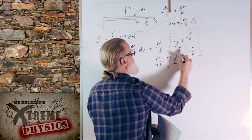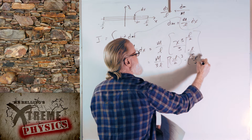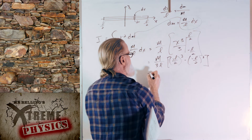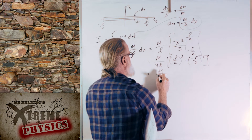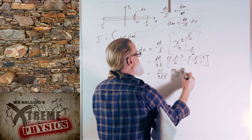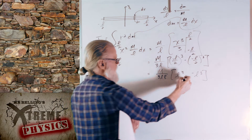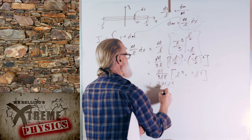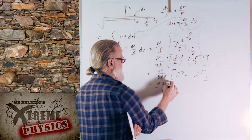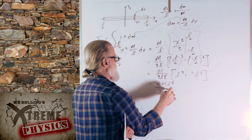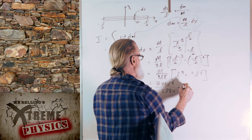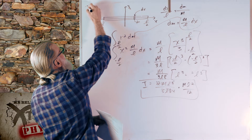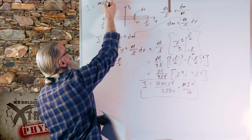We have L over 2 cubed minus negative L over 2 cubed. Cubing the 2's: 2 times 2 is 4, times 2 is 8, so we factor out one-eighth. That gives M over 3L times 8, times L cubed minus negative L cubed — which becomes 2L cubed. So we have 2ML cubed over 3L times 8. Simplifying: the L's reduce to L squared, 2 over 8 gives a 4, and 4 times 3 is 12. We end up with ML squared over 12.